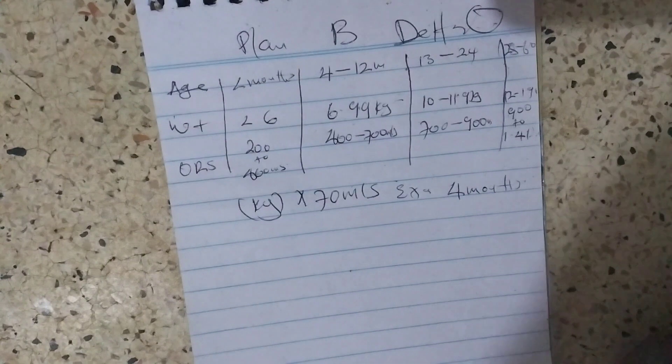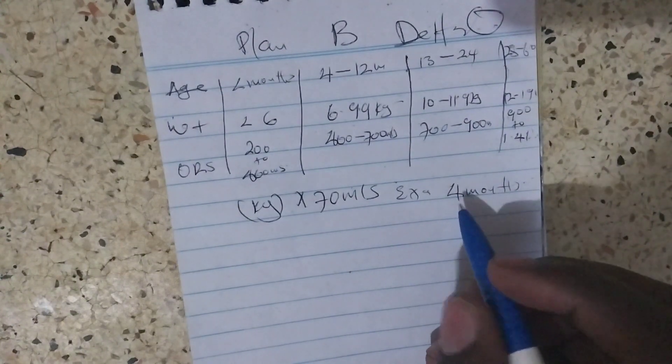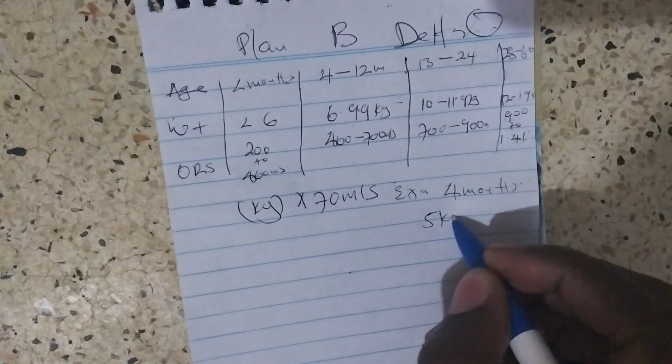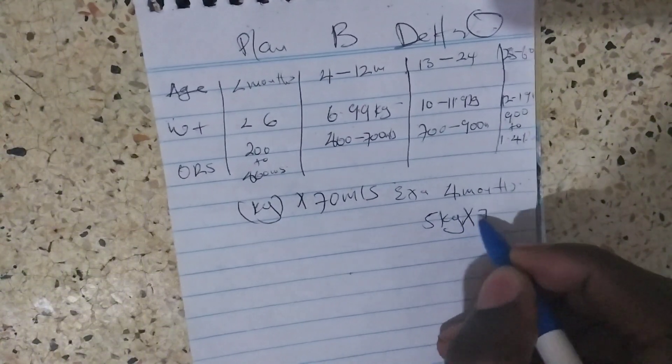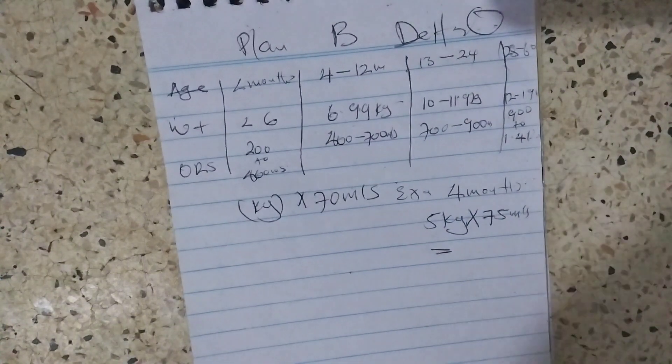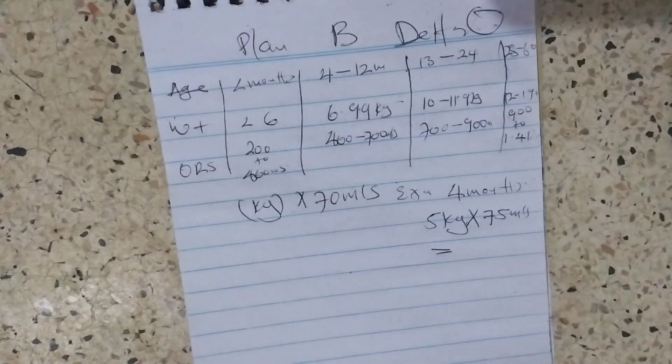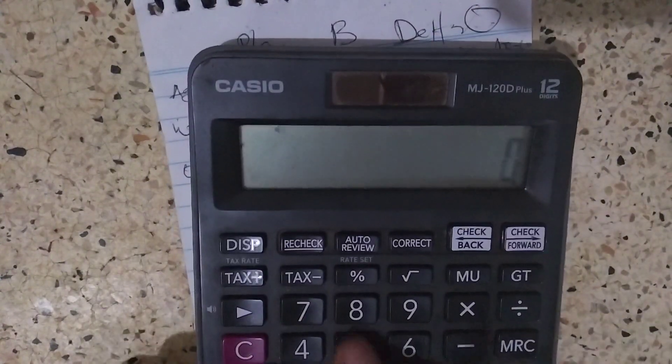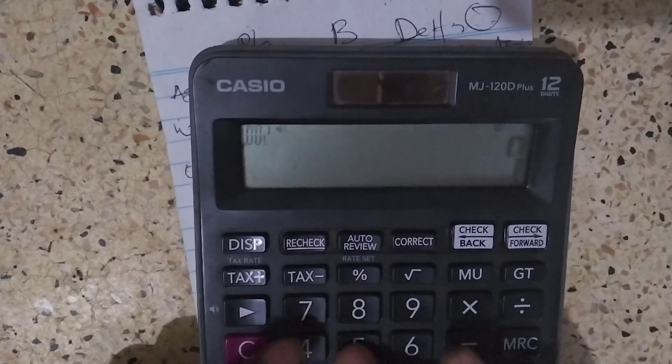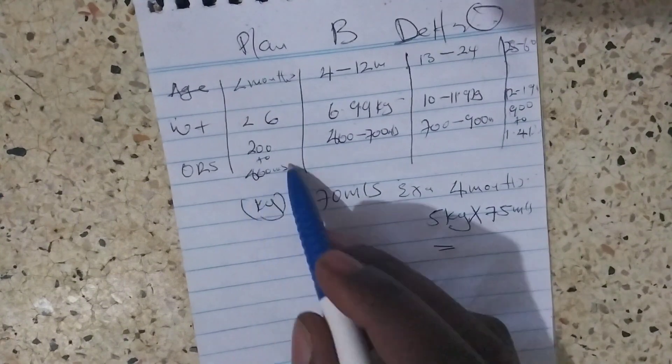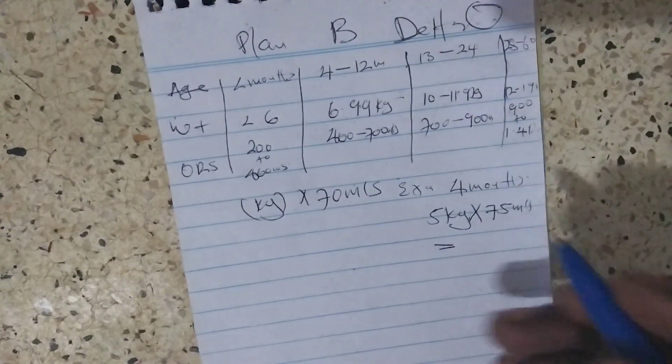For example, if the baby is four months and you don't know the weight, let's assume that the baby is five kilograms, then we multiply by 75 meals. Five times 75, we'll get 375, which is still at the extreme.